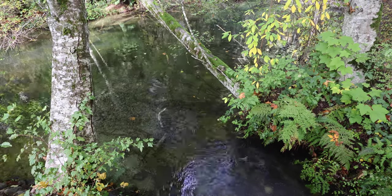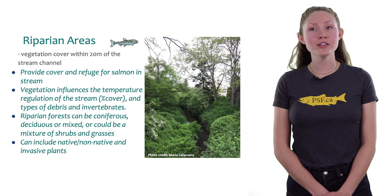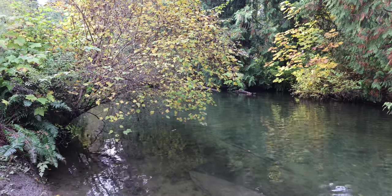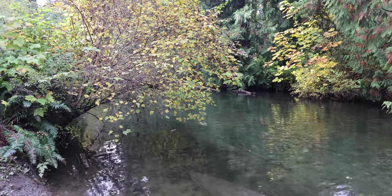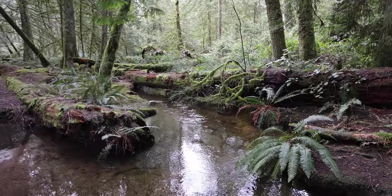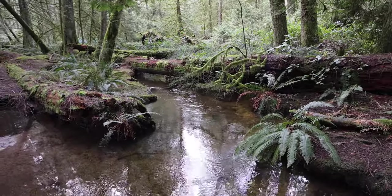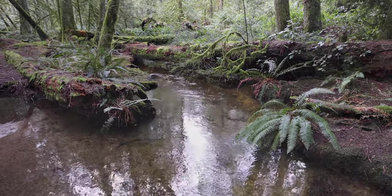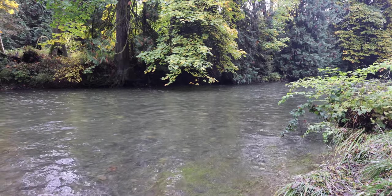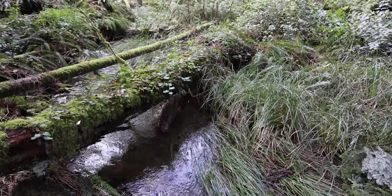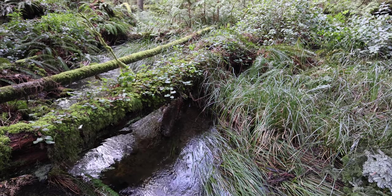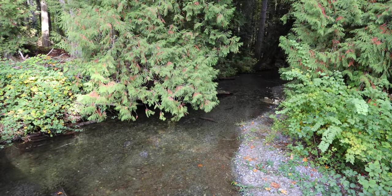Riparian zones are the areas of vegetation on either side of a river or other moving water. Usually we characterize the riparian zone by the vegetation cover within 20 meters of the stream channel. In Canada, riparian forests can be coniferous, deciduous, or mixed, or could be a mixture of shrubs and grasses. The roots of these plants help to hold on to the soil and provide stability to the banks of the rivers.